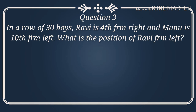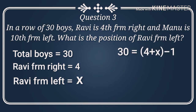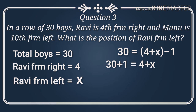Question number three: in a row of 30 boys, a boy is 4th from the right and 6th from the left. Using the equation: total number of boys 30 equals 4 plus 6 minus 1. Rearranging, 30 plus 1 equals 4 plus 6 plus position. The answer is 27.